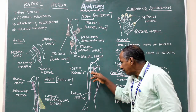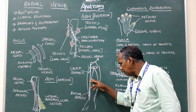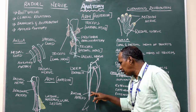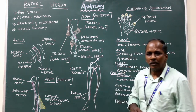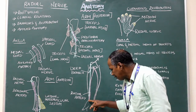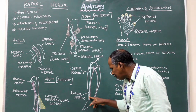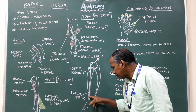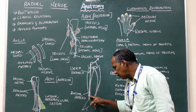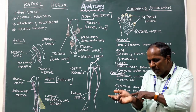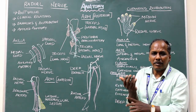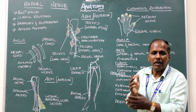The superficial branch is accompanied by the radial artery in its lower two-thirds. Just 5 cm above the wrist joint, the nerve winds laterally and runs towards the posterior aspect of the dorsum of the hand.